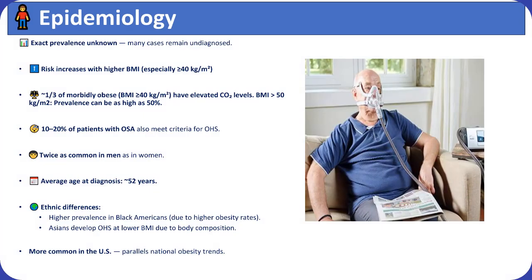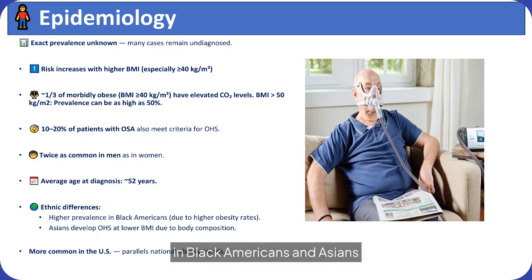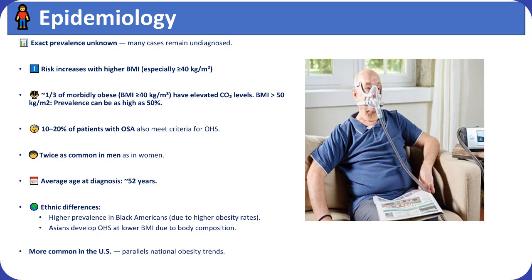The exact prevalence of OHS is unknown, with many cases undiagnosed. Risk increases with higher BMI, especially over 40. One-third of morbidly obese individuals have elevated CO2 levels. OHS is more common in men and is typically diagnosed around age 52. Ethnic differences exist, with higher prevalence in Black Americans and Asians developing OHS at lower BMIs.